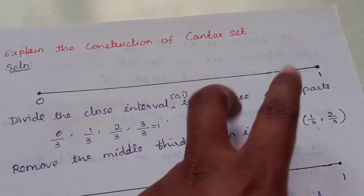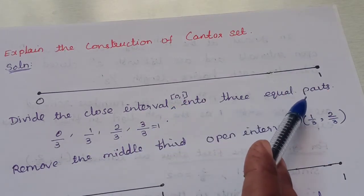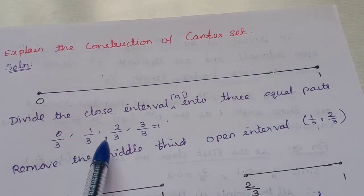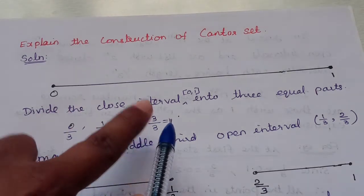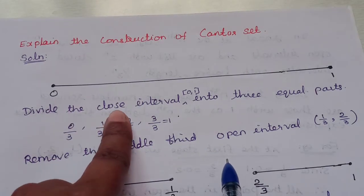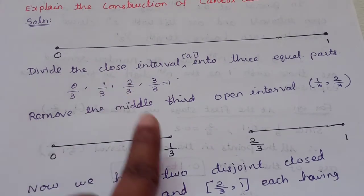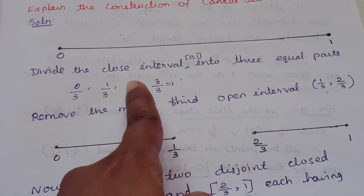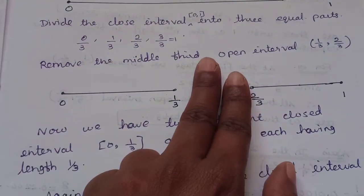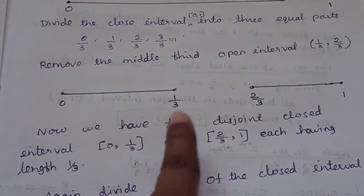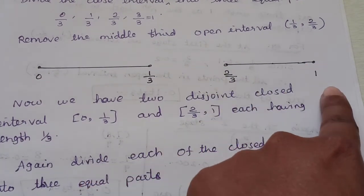Let's consider the closed interval [0, 1]. Divide it into 3 equal parts. The 3 equal parts give points 0/3, 1/3, 2/3, and 3/3 which equals 1 — four points total. This is the middle third. We remove the open interval. The point 1/3 and 2/3 are closed interval endpoints, and we remove the middle portion between them. Now we have 2 disjoint closed intervals: [0, 1/3] and [2/3, 1].